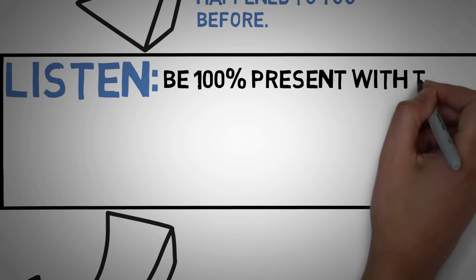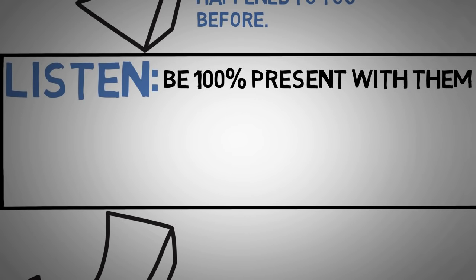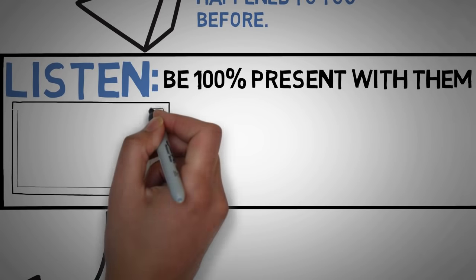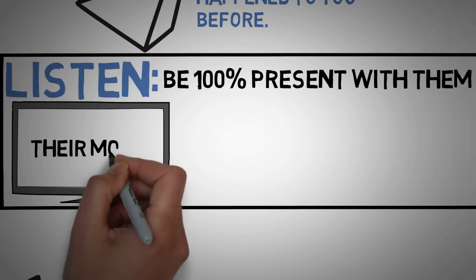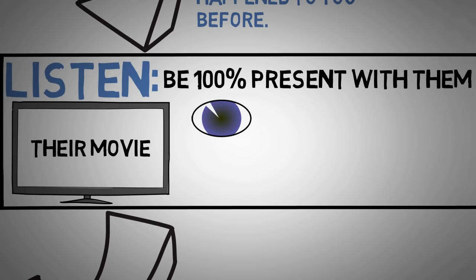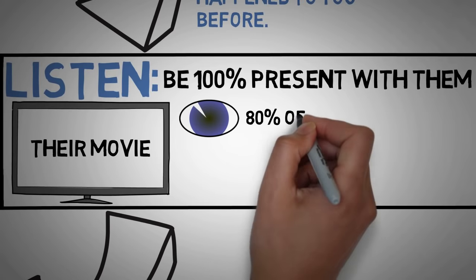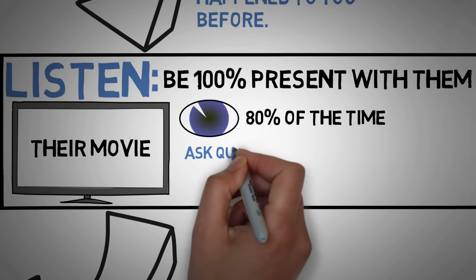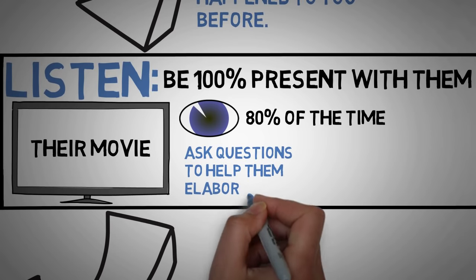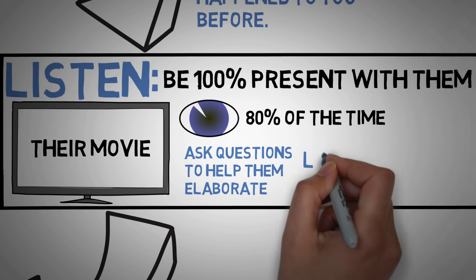The key to being a good listener is to be as present as possible. Listen to them as you would watch a movie. Become enveloped in their world for the brief period of time that they are speaking. You want to hold strong eye contact for at least 80% of the time while they are talking. You want to ask questions that will allow them to elaborate more on points that you're interested in. And most of all, you want to let them do 90% of all the talking.